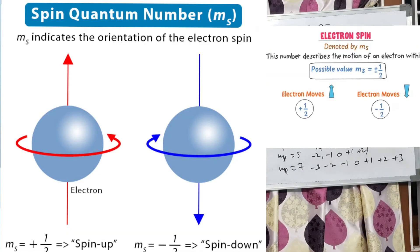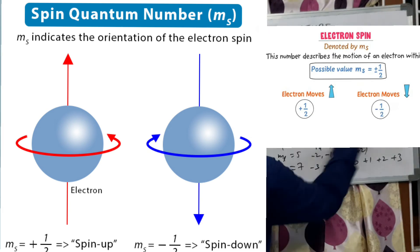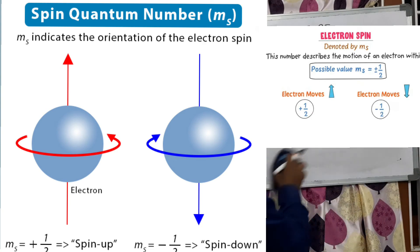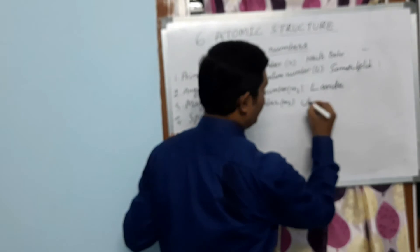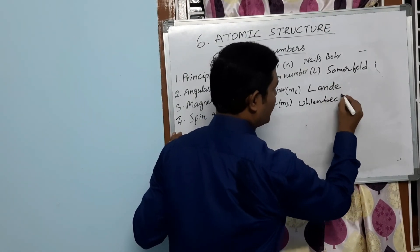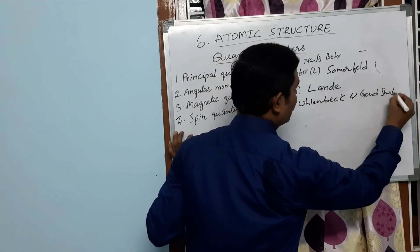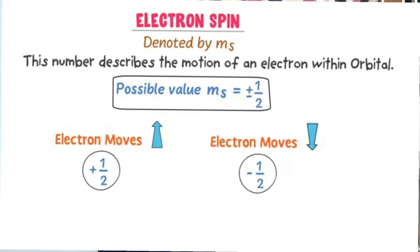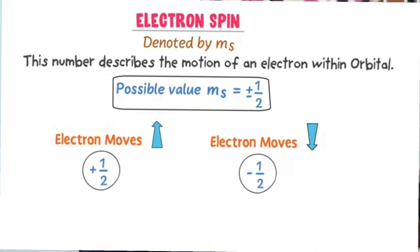Lastly, we discuss the spin quantum number. It explains about the spin or rotation of the electron. The spin quantum number was proposed by Uhlenbeck and Goudsmit. It is denoted by MS, and it has only two values: +½ and −½. There are only two possible rotations for an electron — clockwise and anticlockwise. When the electron revolves in the clockwise direction, we take +½; in the anticlockwise direction, we take −½.